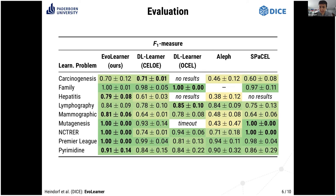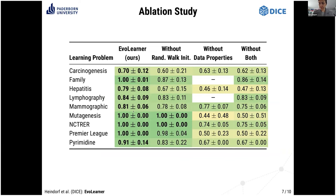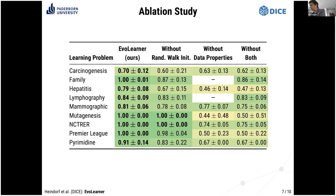We were wondering why our approach performed so well, so we performed an ablation study. We left out our random walk initialization and replaced it with a traditional genetic programming initialization called ramped half-half, where trees are generated completely randomly without looking at the knowledge graph. In this case the performance considerably dropped, showing that random walk initialization is quite important. We also left out support for data properties: for some data sets this matters less, but for others — like the mutagenesis data set — performance drops a lot without data properties.